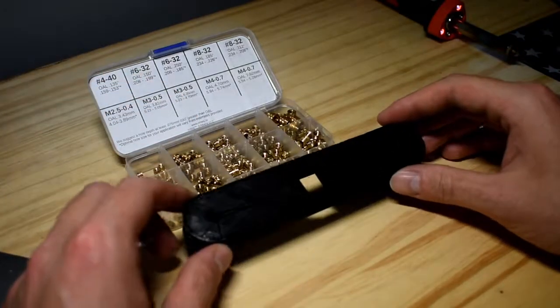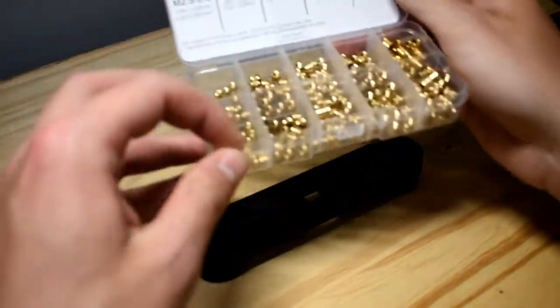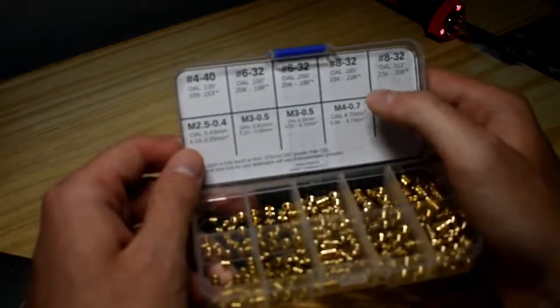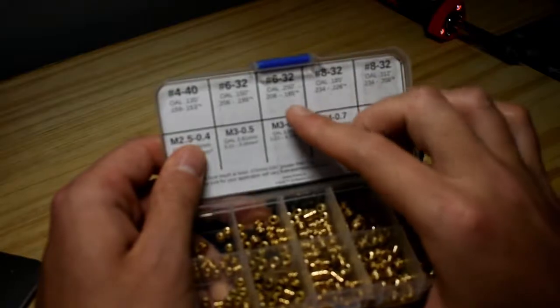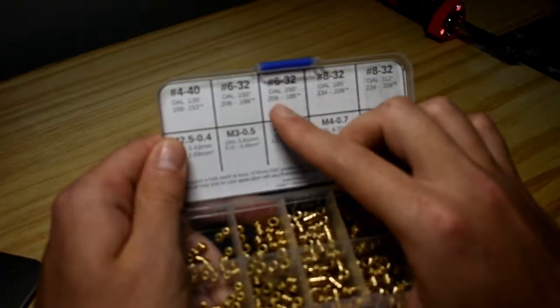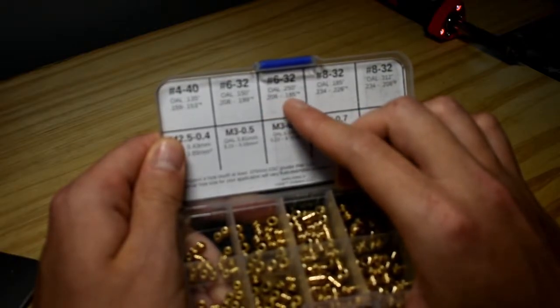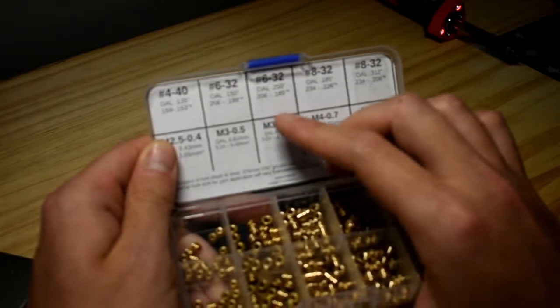For this 3D printed part I used number 6 holes and what's also nice about this kit is it actually gives you the recommended hole size. So I'm using number 6 and it says the optimal hole size is .206 or .185 to .206 inches.